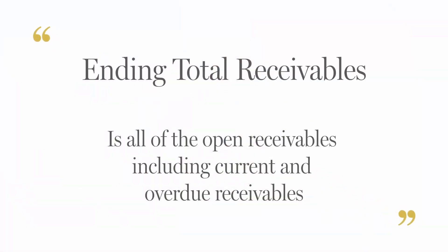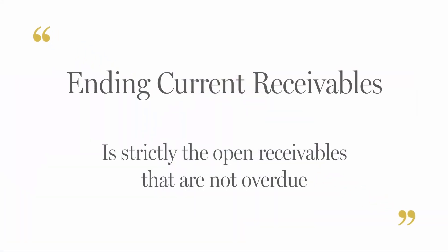Here's the differentiator in the two equations on that division line. Ending total receivables is all open receivables, including current and overdue receivables — so it's the entire spectrum. Ending current receivables, on the other hand, is only current receivables — not overdue receivables, not everything, just the ones that are current. This is the key to figuring out what that differential is in that percentage. This equation is showing you what was the total amount that could have been collected and what did you actually collect, and the differential is the percentage. So these words and phrases are very important — key in on them.